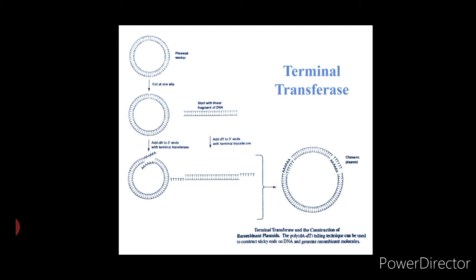Terminal transferase is used to add homopolymer tails to DNA fragments. Using this technique, sticky ends can be built up on blunt-ended molecules. Second, it is used for 3' end labeling of DNA fragments with P32 or by incorporating a non-radioactive tag. Third, terminal transferase can also be used for addition of single nucleotides at the 3' ends of DNA for in vitro mutagenesis.